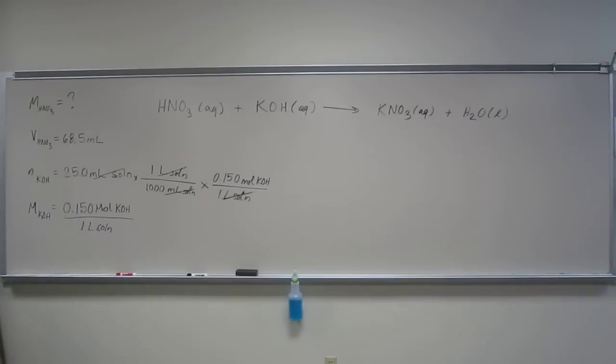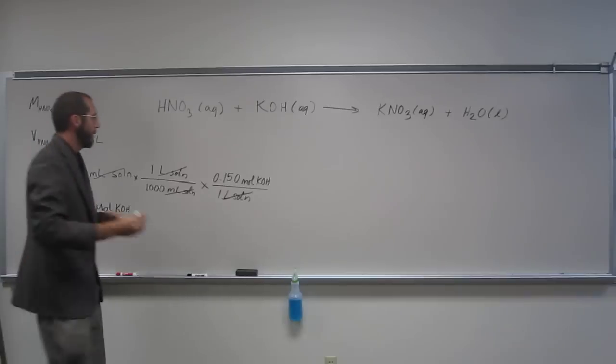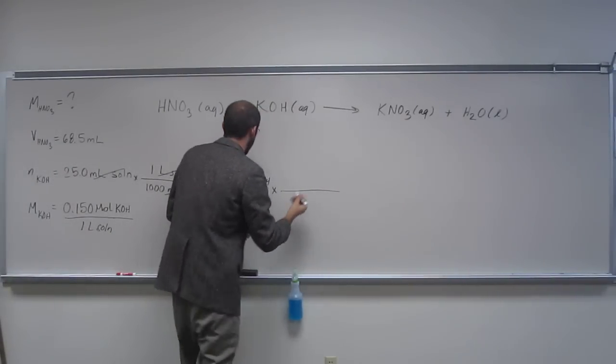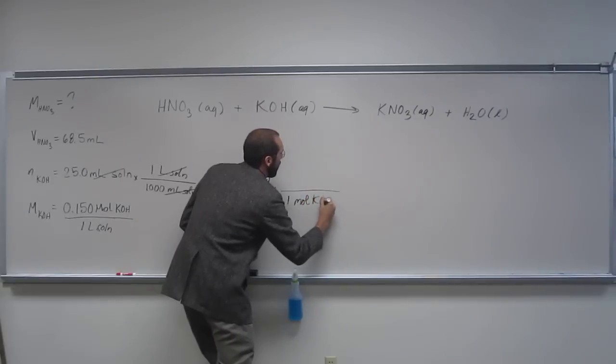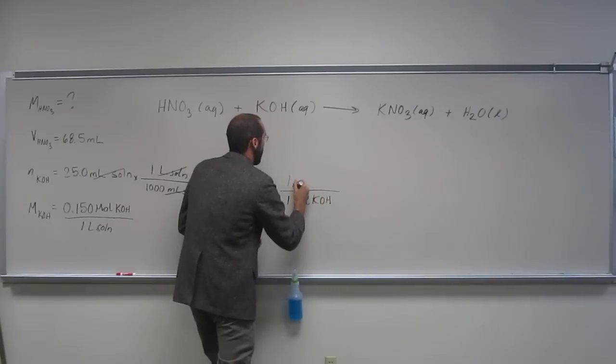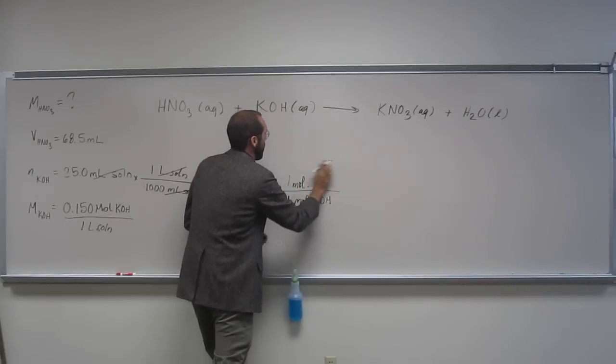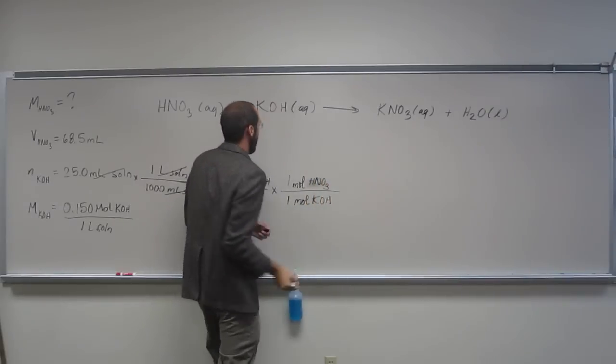So can we figure out the number of moles of nitric acid that we have from this too? Right? We could, right? Because we've got this chemical equation here. Is everybody okay with that? So let's just do that. What's the ratio? One to one. One to one. Right. Very good. One mole to H, one mole HNO3.